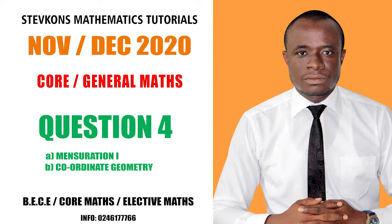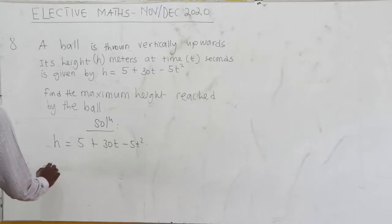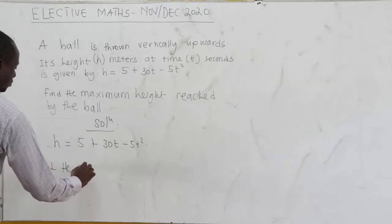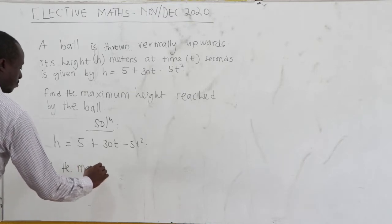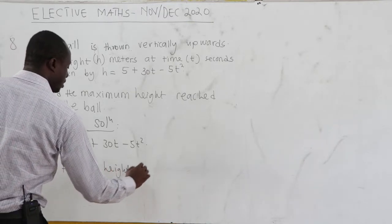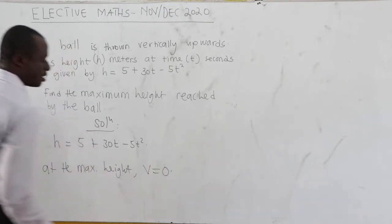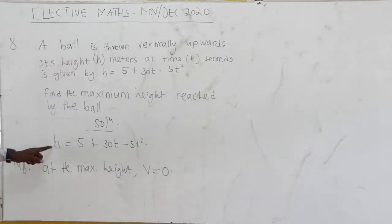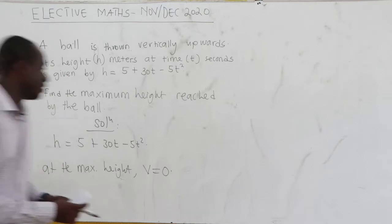We have to note that at the maximum height, velocity is zero. But we have displacement. How can we get velocity?